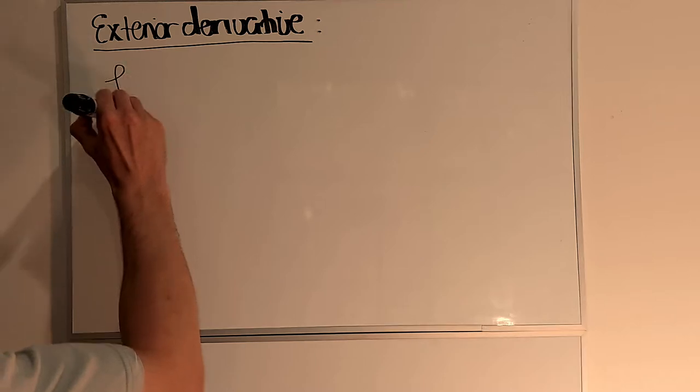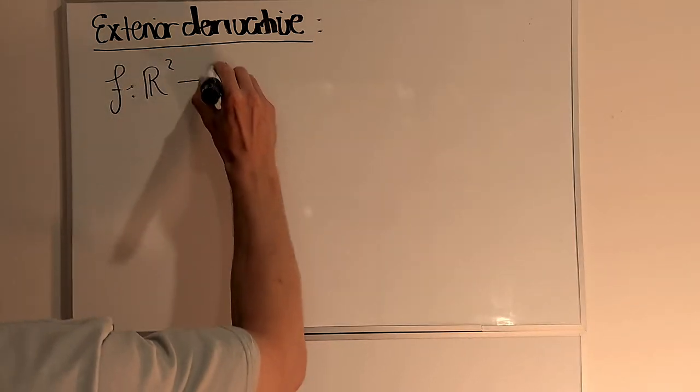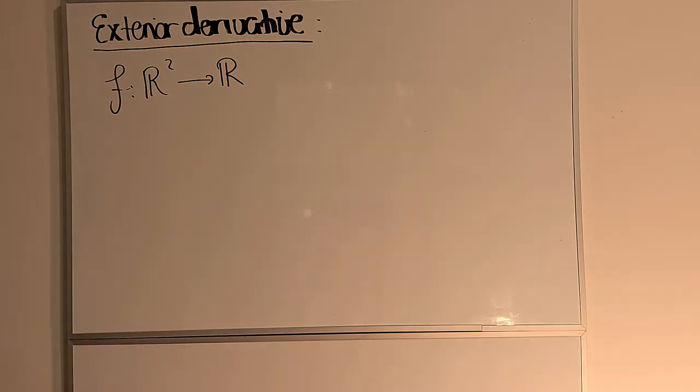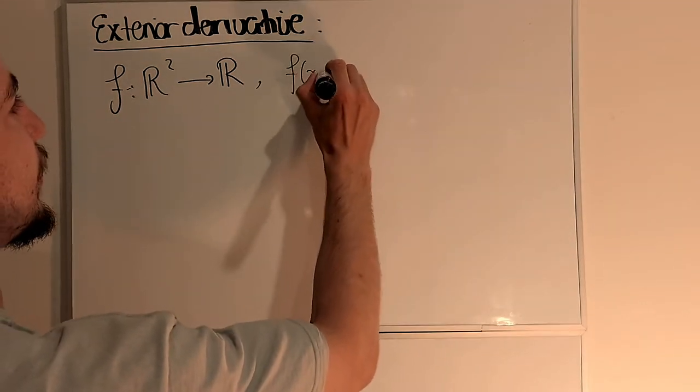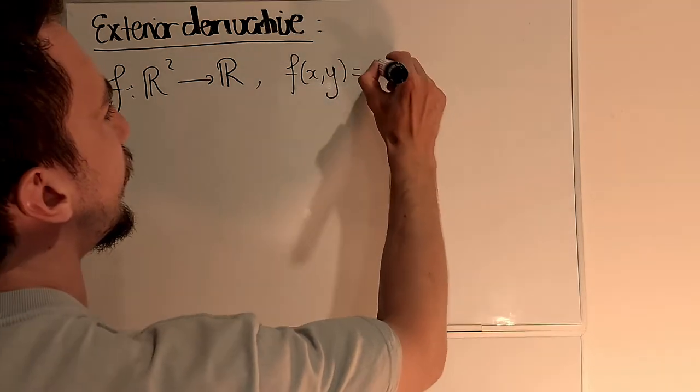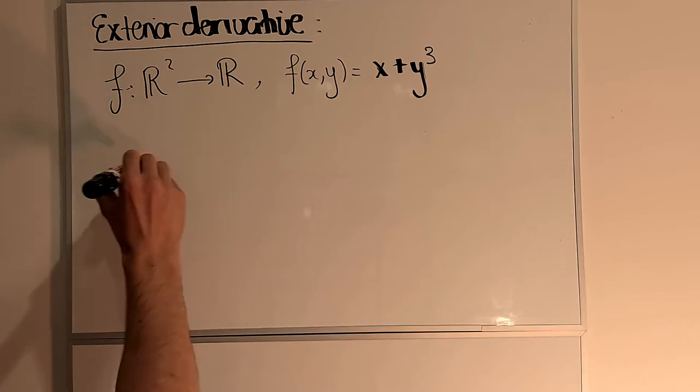Recall that if we have a function, let's say from R² to R, so it's a function of two variables. Let's be specific - suppose that f is given by the formula x + y³. Then I can look at